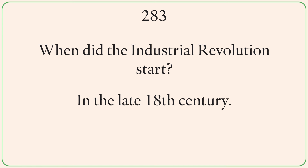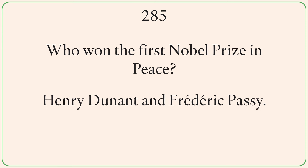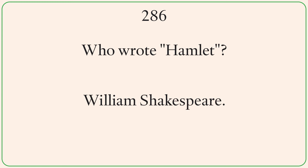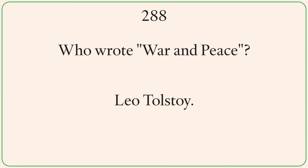When did the Industrial Revolution start? In the late 18th century. Who was the first President of the United States? George Washington. Who won the first Nobel Peace Prize? Henry Dunant and Frédéric Passy. Who wrote Hamlet? William Shakespeare. Who is the Greek Goddess of Wisdom? Athena. Who wrote War and Peace? Leo Tolstoy.